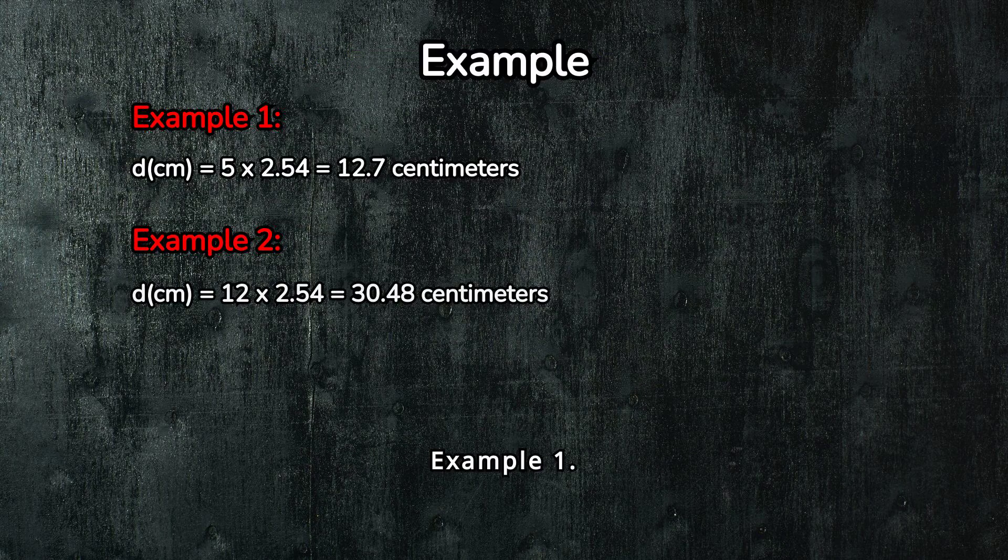Example 1. Let's say you have something that's 5 inches long and you want to know how many centimeters that is. You simply multiply 5 by 2.54. So, 5 inches is equal to 12.7 centimeters. Easy, right?